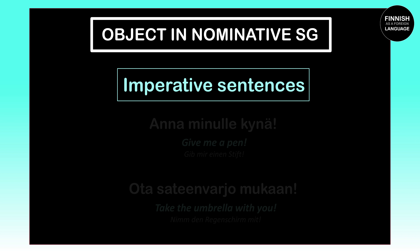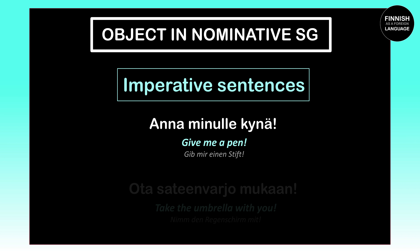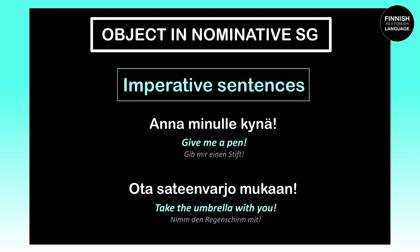Now let's learn when the object stays in nominative singular. When we have an imperative sentence, the object stands in nominative singular. Here's one example: 'Anna minulle kynä' means 'Give me a pen.' 'Anna' is the second person singular imperative of 'antaa,' meaning 'to give.' Because this is an imperative sentence, the object — the pen — needs to stand in the nominative singular. Another example: 'Ota sateenvarjo mukaan' means 'Take the umbrella with you.' 'Ota' is the second person singular imperative, so the object — the umbrella — stays in the nominative singular.